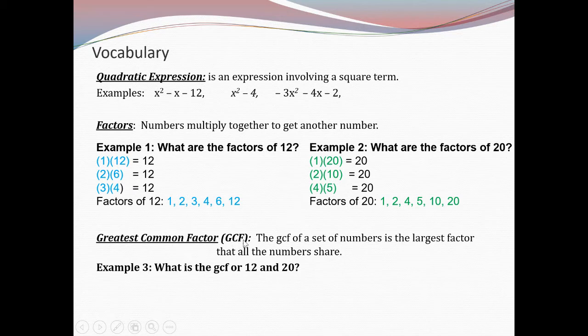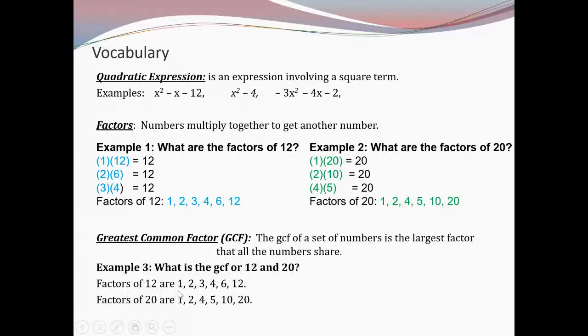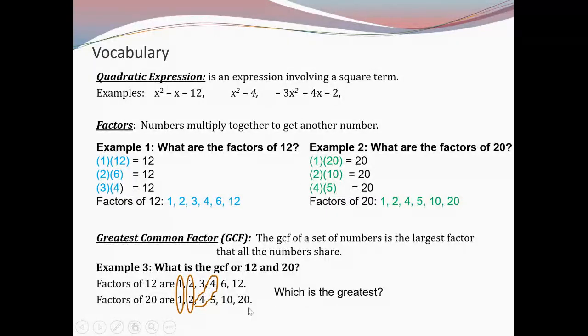Greatest common factor — called the GCF — was step number one. The GCF of a set of numbers is the largest factor that all numbers share. Example three: what is the GCF of 12 and 20? The factors of 12 are 1, 2, 3, 4, 6, 12. The factors of 20 are 1, 2, 4, 5, 10, 20. What do they have in common? A 2 and a 4. The greatest factor they share is 4, so the GCF of 12 and 20 is 4.